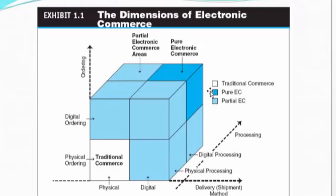This diagram shows an X and Y axis with a cube. The legend shows traditional commerce at one end — the typical small grocery stores. In the UAE we have something called a bakala, and similar small convenience stores exist in many countries. They don't sell anything online — they have traditional commerce with physical ordering and physical delivery. The person comes in, picks up milk or bread, pays, and leaves.